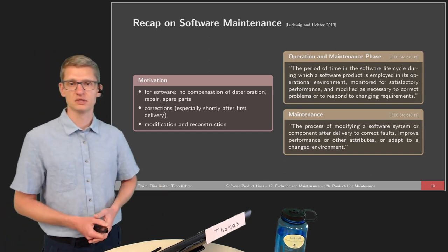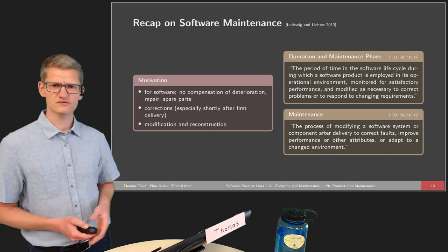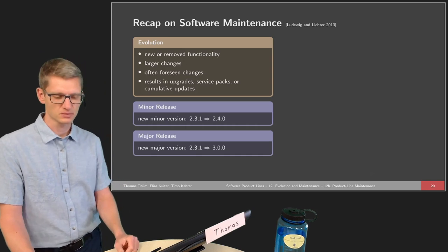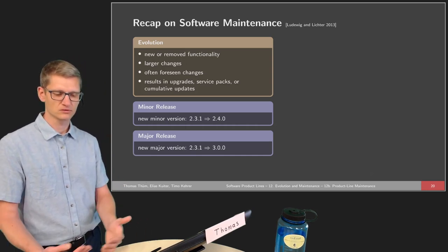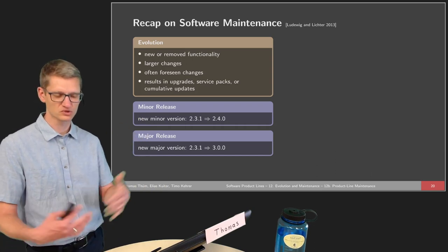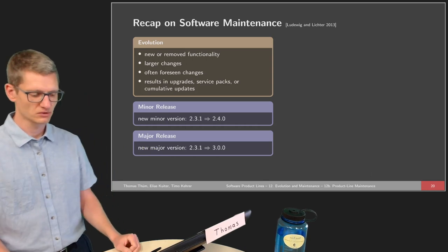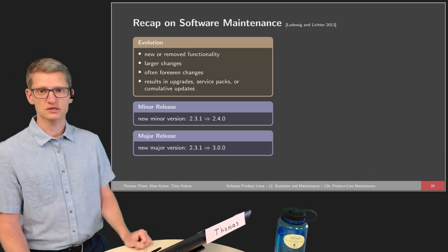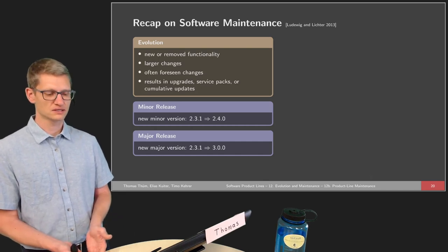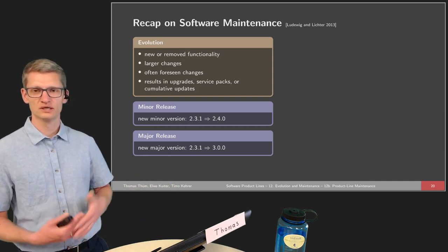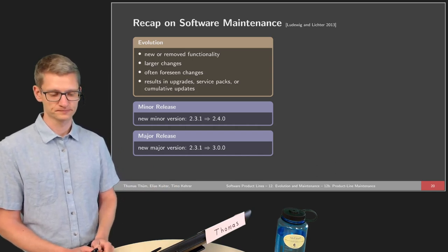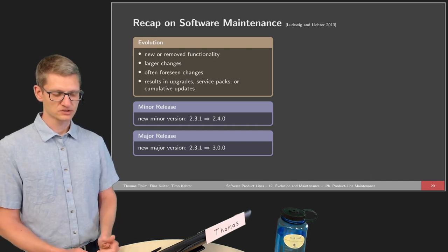This all sounds very similar to evolution — so what is the difference between evolution and maintenance? Evolution is more or less about adding or removing functionality, as we've seen from the Linux kernel gaining more features and lines of code. We do have larger changes during evolution than in maintenance, and changes are often foreseen — for example, planning ahead that a new architecture will be supported in the operating system.